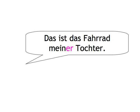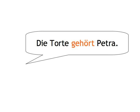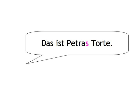Die Torte gehört Petra. [pause] Das ist Petras Torte. As this is a proper name, you construct it as in English by adding an S, but you leave out the apostrophe.